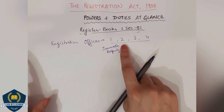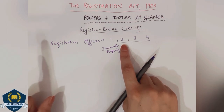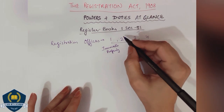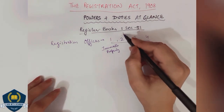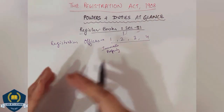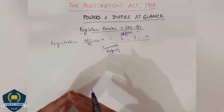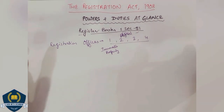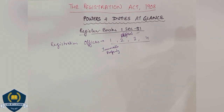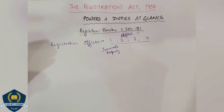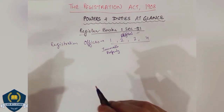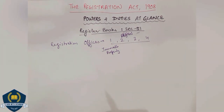Then comes book number 2. Book number 2 includes the record of reasons for the refusal to register. If the registrar or registering officers refuse to register a document, the statement of why they refused must also be written. Otherwise it would be an injustice to the party — they should know the reason. If any case arises for them later, the record is there.